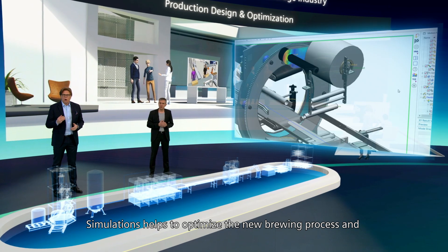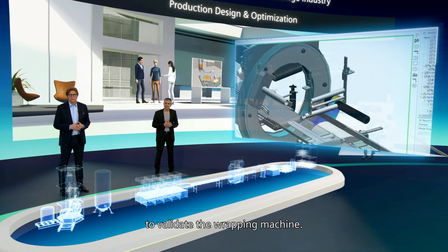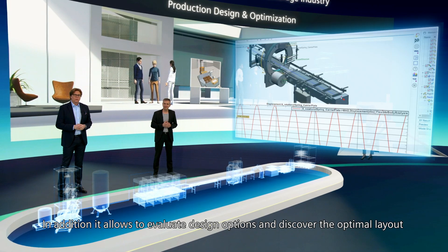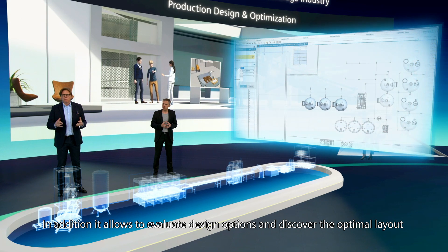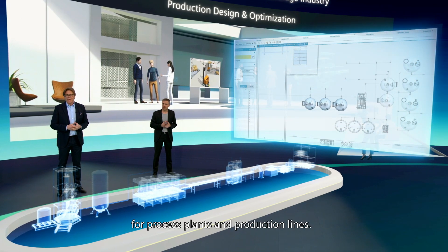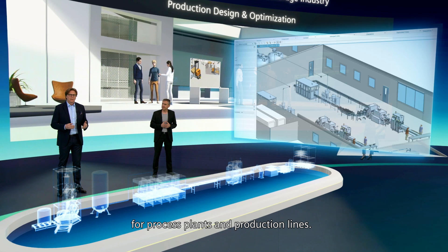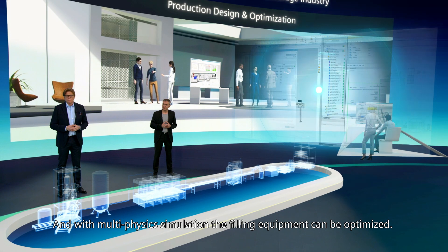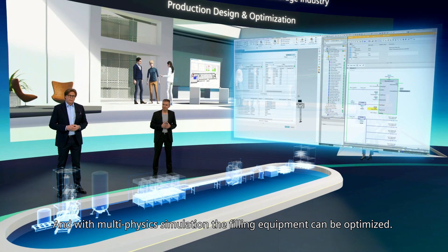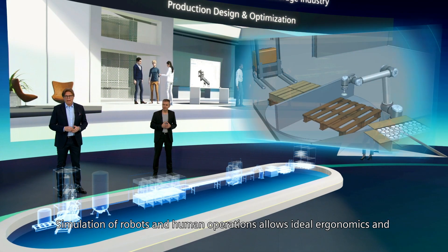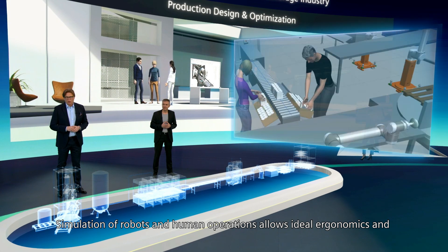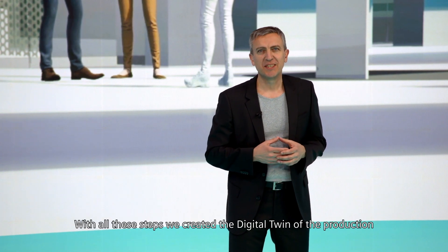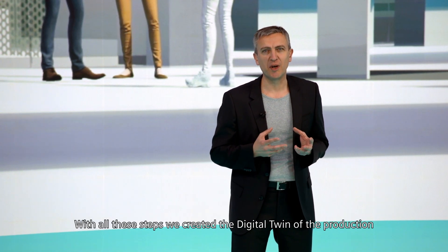Simulations help to optimize the new brewing process and to validate the wrapping machine. In addition, it allows us to evaluate design options and discover the optimal layout for process plants and production lines. With multi-physics simulation, the filling equipment can be optimized. Simulation of robots and human operations allows ideal ergonomics and working conditions. With all these steps, we created the digital twin of the production.